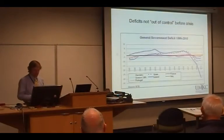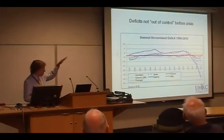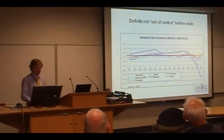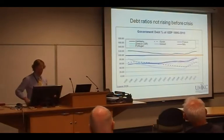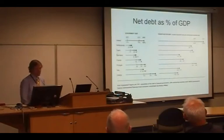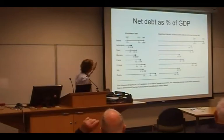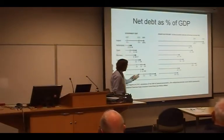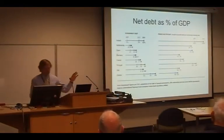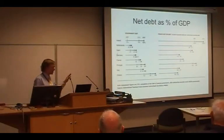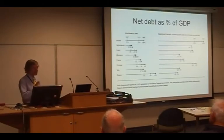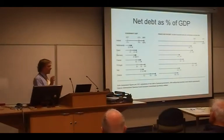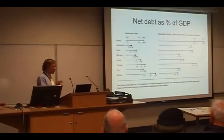First, deficits were not out of control before the crisis. You can see across all countries, even the Mediterranean ones, their deficits were not out of control. Government debt as a percent of GDP was not out of control. It was not rising on trend in any of these countries until the crisis. Our argument is none of these debt ratios would be unreasonable for any sovereign country that issues its own currency. The private sector debts, however, were huge — in a couple of cases close to the US private sector debt ratio. So it really is a private sector debt problem that became a government debt problem when some of these nations chose to bail out their banks.